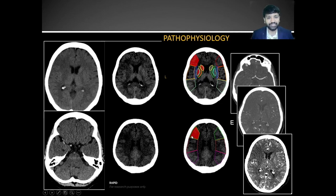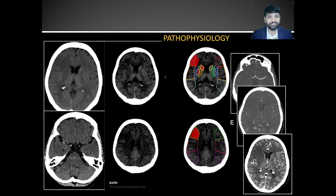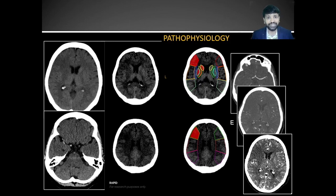For example, in this case there is involvement of five areas marked in red, meaning the ASPECTS score will be 10 minus 5, which equals 5. The more areas involved, the lower the ASPECTS score, indicating poor prognosis. If you have a good ASPECTS score, you will have a good prognosis — for example, if only one area is involved the score is 10 minus 1, which is 9, indicating good prognosis. ASPECTS scoring brings uniformity in reporting so the clinical team can take an informed decision.